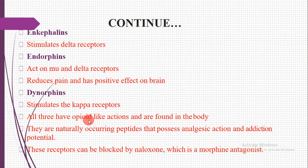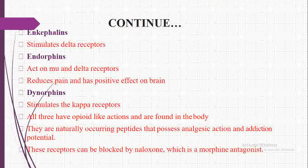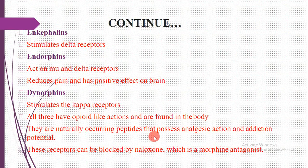Opiate analgesics are drugs that relieve pain sensation as well as induce sleep. They are naturally occurring peptides that possess analgesic action and addiction potential. Some people become addicted to such substances. These receptors can be blocked by naloxone and naltrexone, which are morphine antagonists.